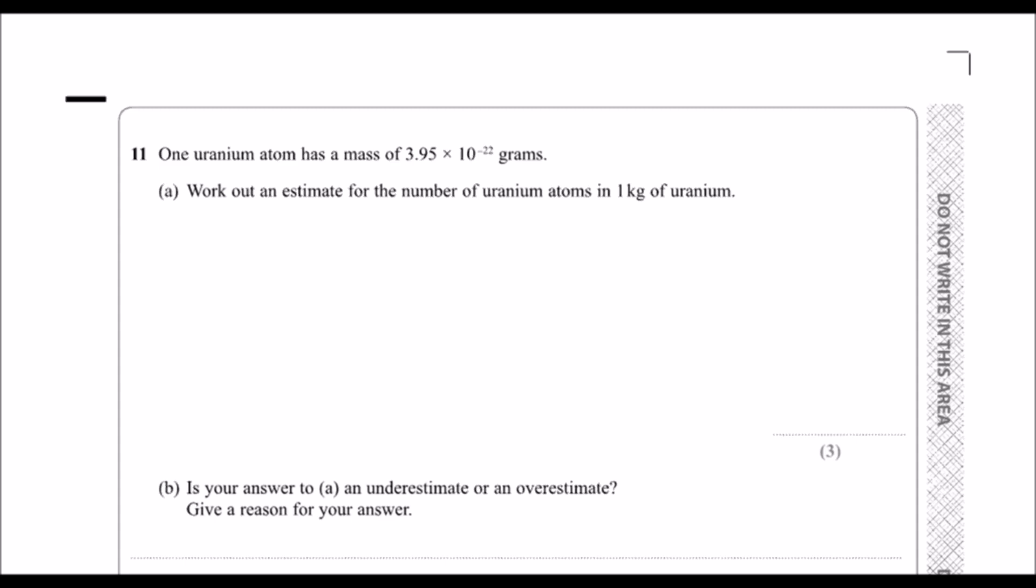So it's going to be loads. How are we going to work it out? The key word here is estimate. Whenever we see estimate, that means we're rounding. So I've got 3.95, I'm going to round it. To make it easy for myself, I'm going to make it one significant figure: 4 times 10 to the power of minus 22.